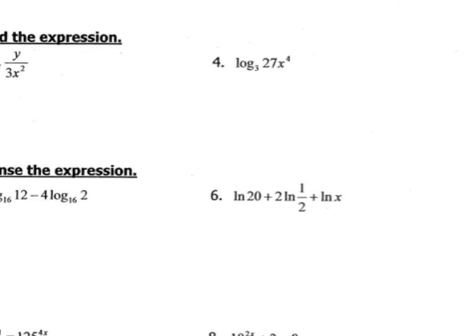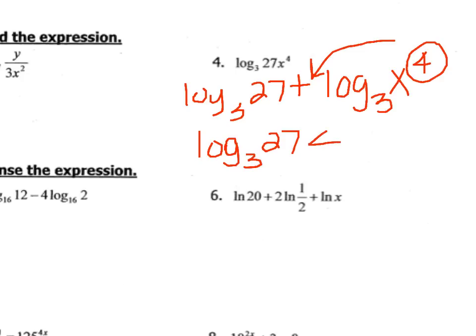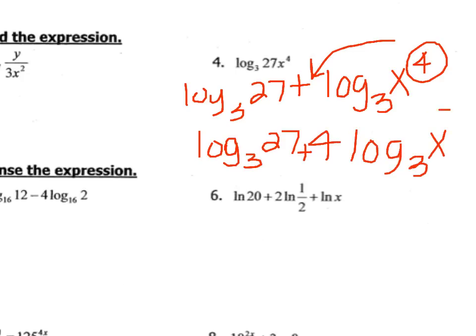Looking at number 4, it is very similar. I'm going to start by breaking this up using addition, because it's multiplied together. Our final step would be to go ahead and bring our exponent out in front to be the coefficient. Some of you actually took this one a step further and wrote this as log base 3 of 3 cubed, and since log base 3 of 3 is 1, you ended up getting 3 there, which was completely correct.